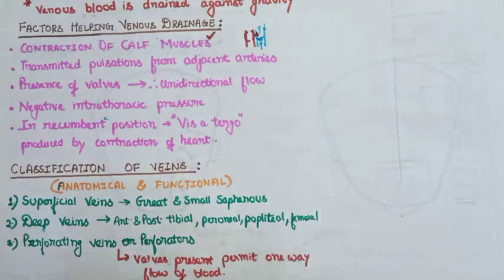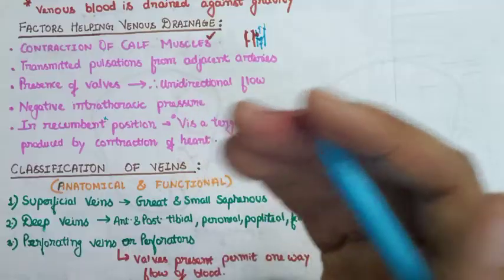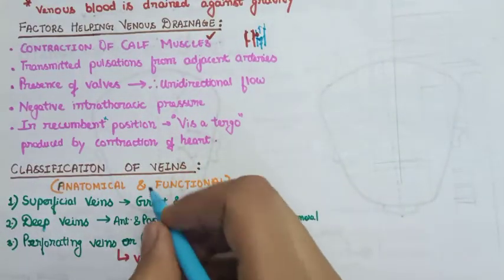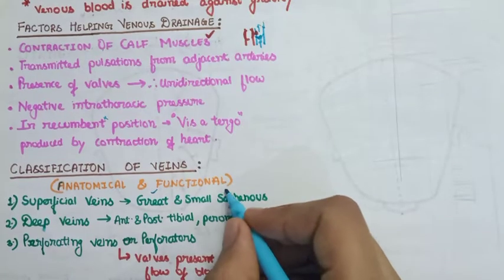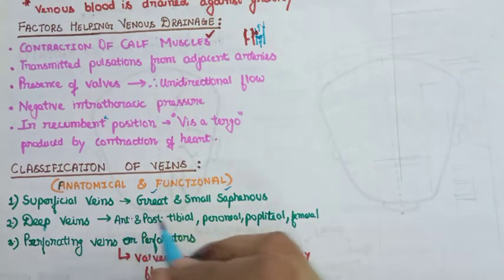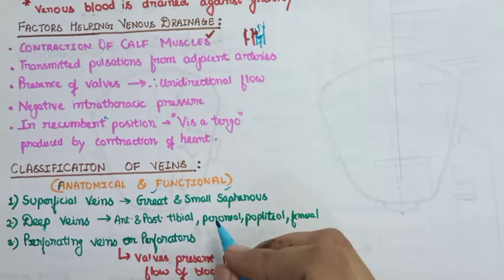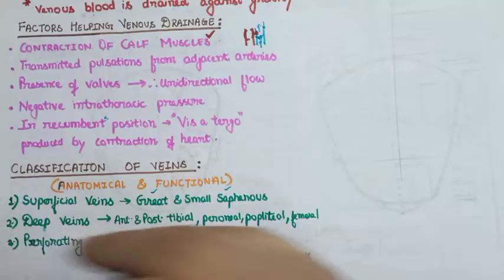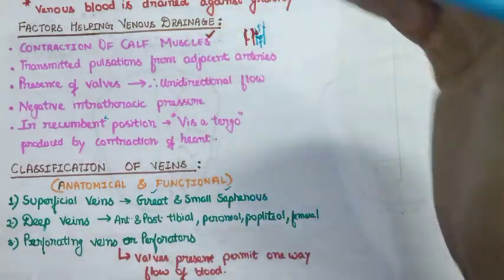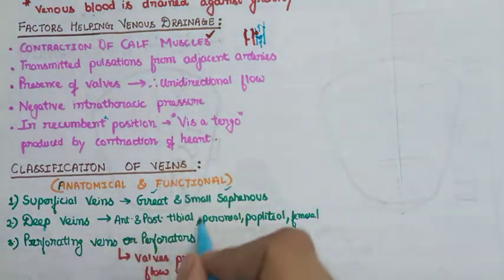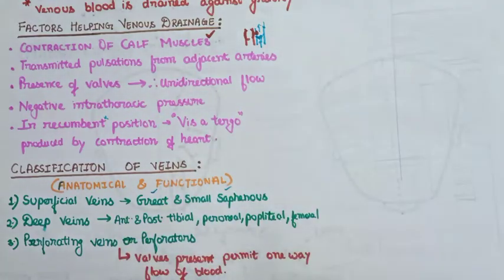In the superficial veins, the two main ones are the great saphenous vein and the small saphenous vein, along with a number of smaller branches. In the deep veins, we have the anterior and posterior tibial, peroneal, popliteal, and femoral veins — listed from down to up, with the tibial veins in the lower region and the femoral vein above.